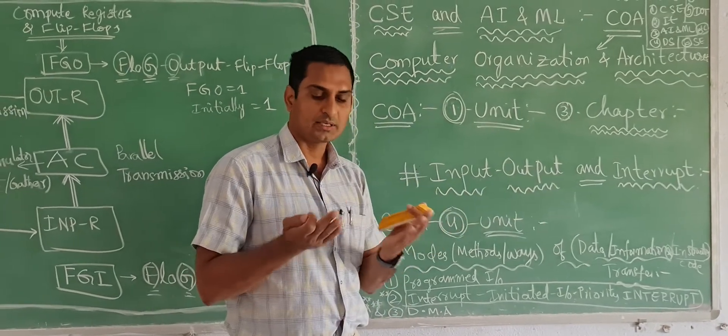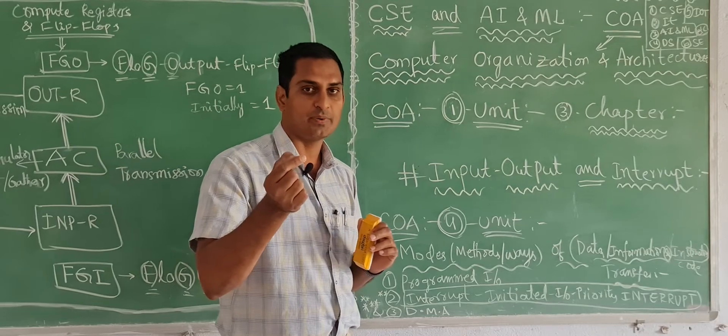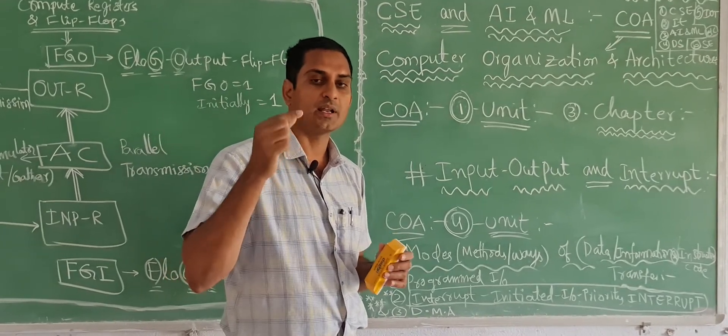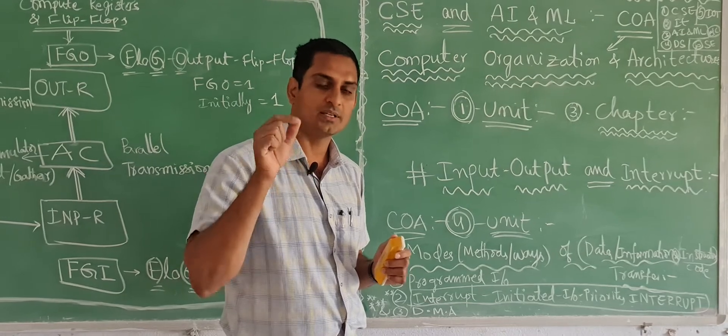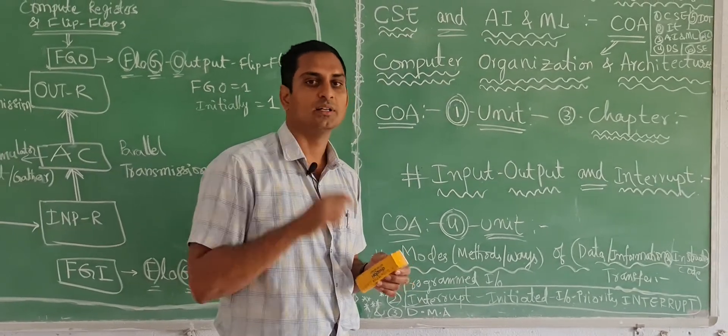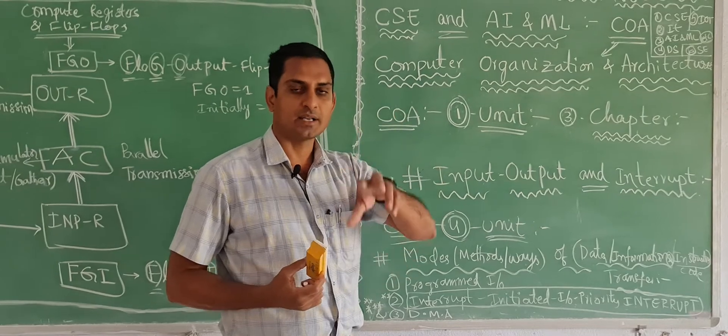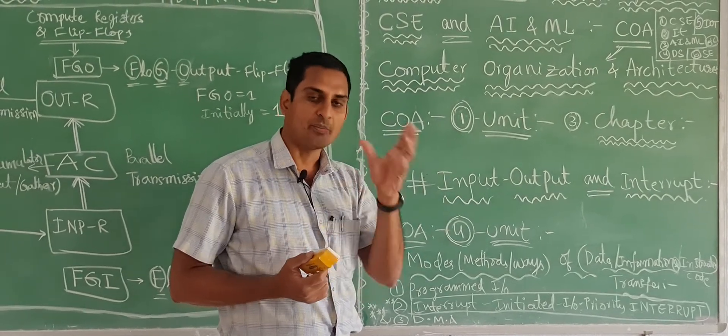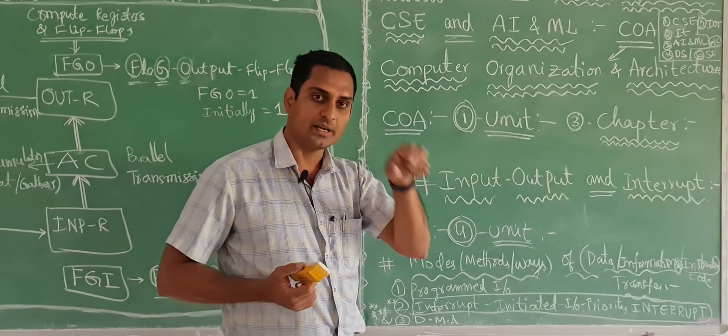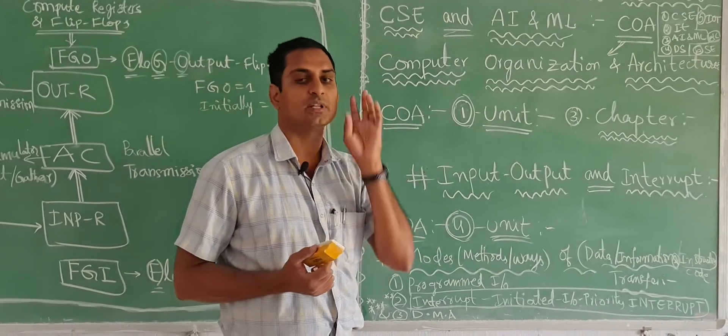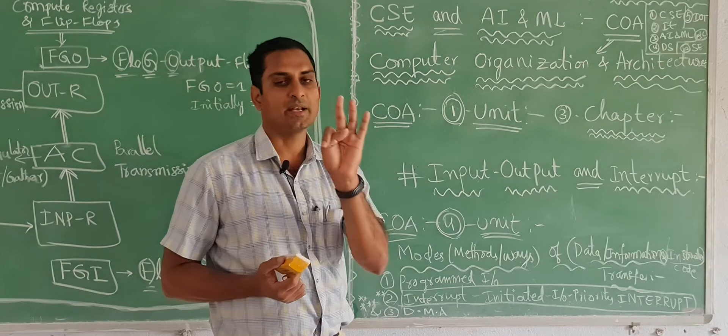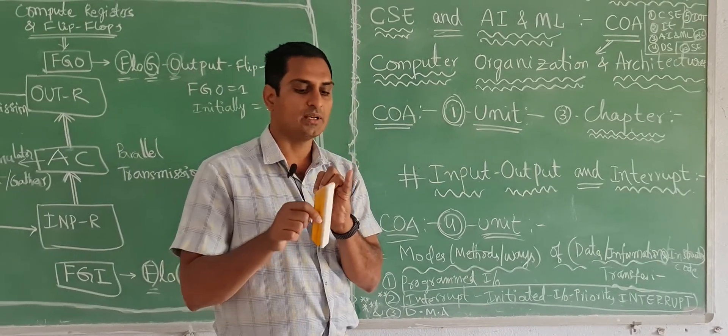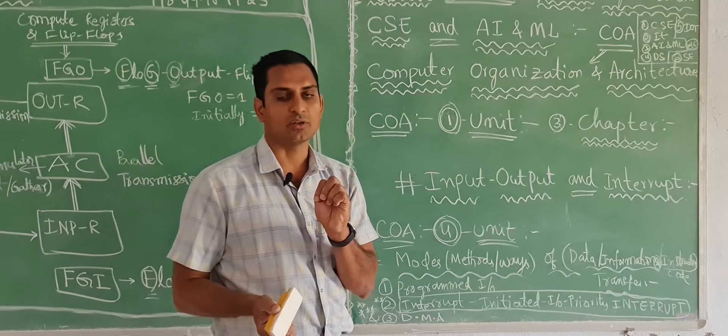One more tip here for you. In micro operations, the operation done on register is called micro operation. Register is the smallest part, that is why it is micro small. The operations done on the data stored in the register are called micro operations. Those are four types: arithmetic micro operation, mathematical calculation, logic micro operation, shift micro operation.